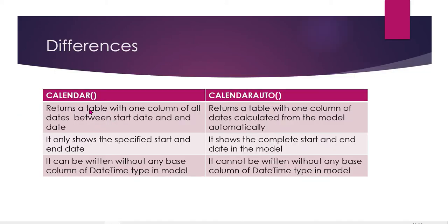The main difference is Calendar and Calendar Auto — both return a table with one column of dates. The calendar table returns a single column of dates, but the difference is there. The calendar table start date and end date is explicitly set, like 2021 January 1st.